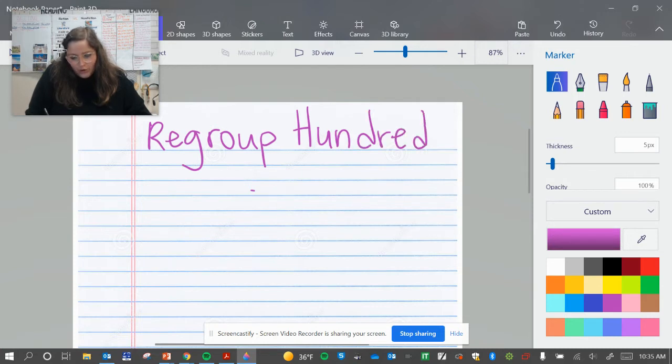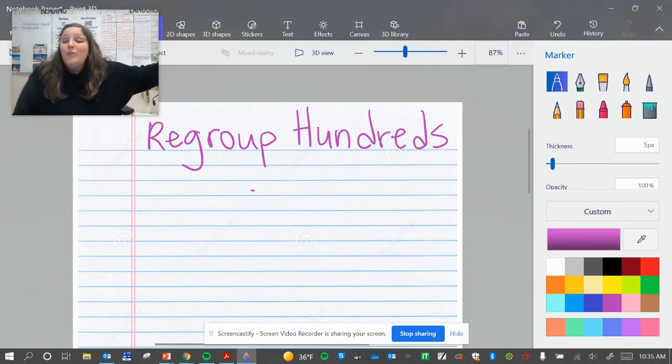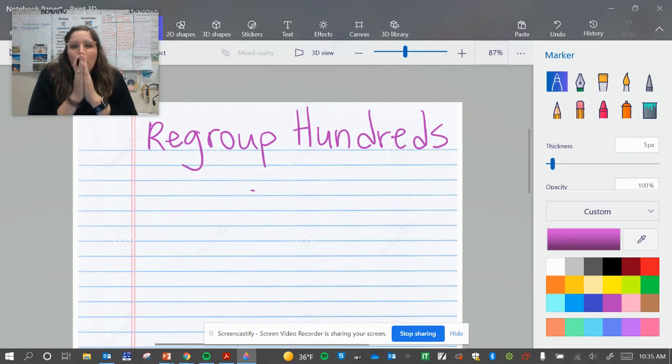So when we regroup, remember that we are taking one place value amount. Whether it's 100 or 10, it could be 1,000 or 10,000 or 100,000. This works even when you get into really big numbers. But what we're doing is we're taking one of something and we're making it into 10 of something else.